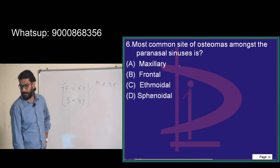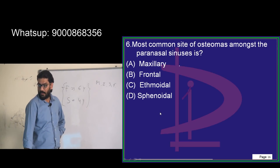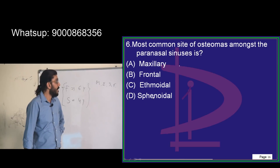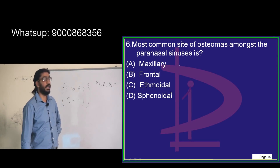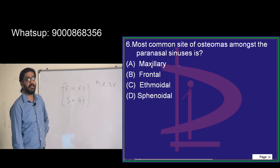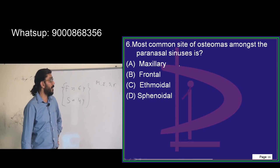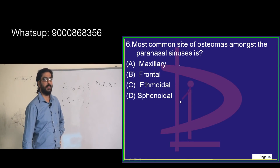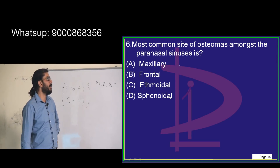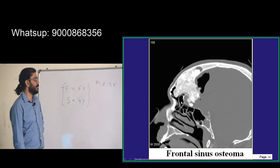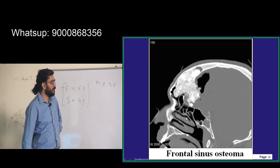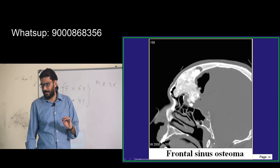Among the sinuses — maxillary, frontal, ethmoidal, and sphenoidal: ethmoidal sinus is related to cavernous sinus thrombosis and orbital cellulitis. Frontal sinus is related to osteoma. Maxillary sinus is related to fibrous dysplasia, and it is also the most commonly involved in sinusitis. Sphenoidal sinusitis is related to orbital apex syndrome. The answer: osteoma is of the frontal sinus.